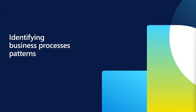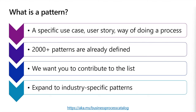I want to start by identifying what a business process pattern is and how you can find these to be authored. A business process pattern is a specific use case, user story, or way of doing a particular business process. If you recall from part four of our Tech Talk series, we talked about what a business process is — a specific set of tasks that leads to an outcome meeting a specific objective. The pattern is the specific way of doing something. We've already identified more than 2,000 patterns in our business process catalog, and we expect this number to grow significantly. We want your help to make this happen.